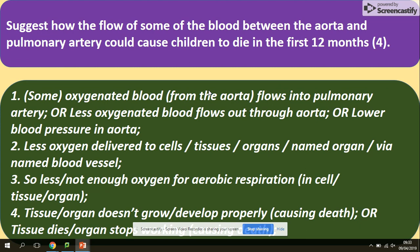This is a really good question about oxygenated and deoxygenated blood: suggest how the mixing of blood between the aorta and pulmonary artery could cause children to die. The aorta carries oxygenated blood; the pulmonary artery carries deoxygenated blood. The suggestion is that oxygenated and deoxygenated blood would mix — some oxygenated blood from the aorta would flow into the pulmonary artery — resulting in a harmful effect on oxygen delivery.